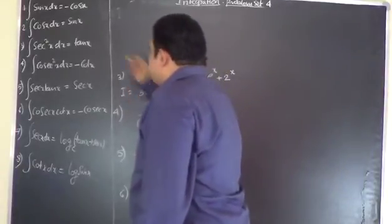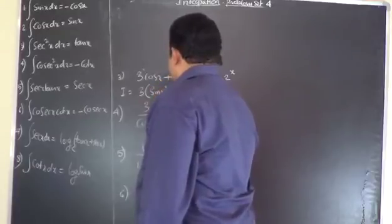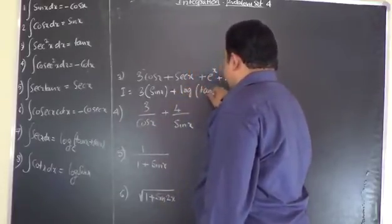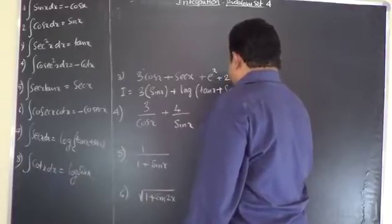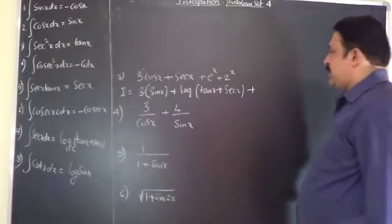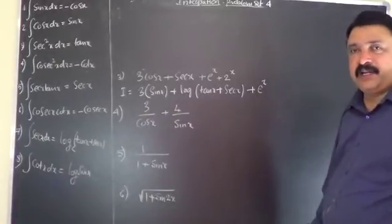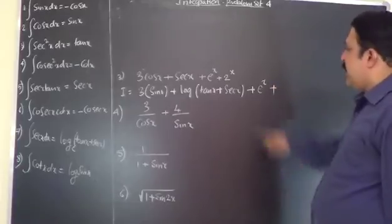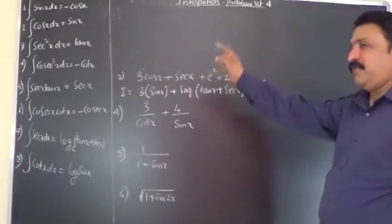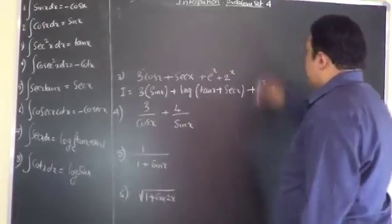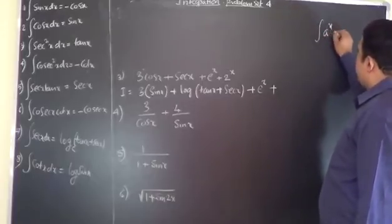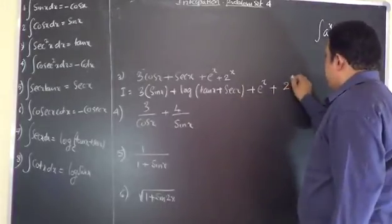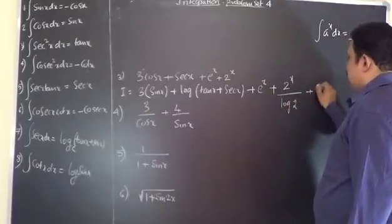So I equals: 3 times integral cos x dx is sin x, plus integral sec x dx written as log|tan x + sec x|, plus integral e^x — the integration of e^x is e^x, whether integrating or differentiating it is the same — plus integration of 2^x. From the formula list, integral a^x dx is a^x divided by log a plus c, so 2^x integrates to 2^x divided by log 2 plus c. That is the answer.